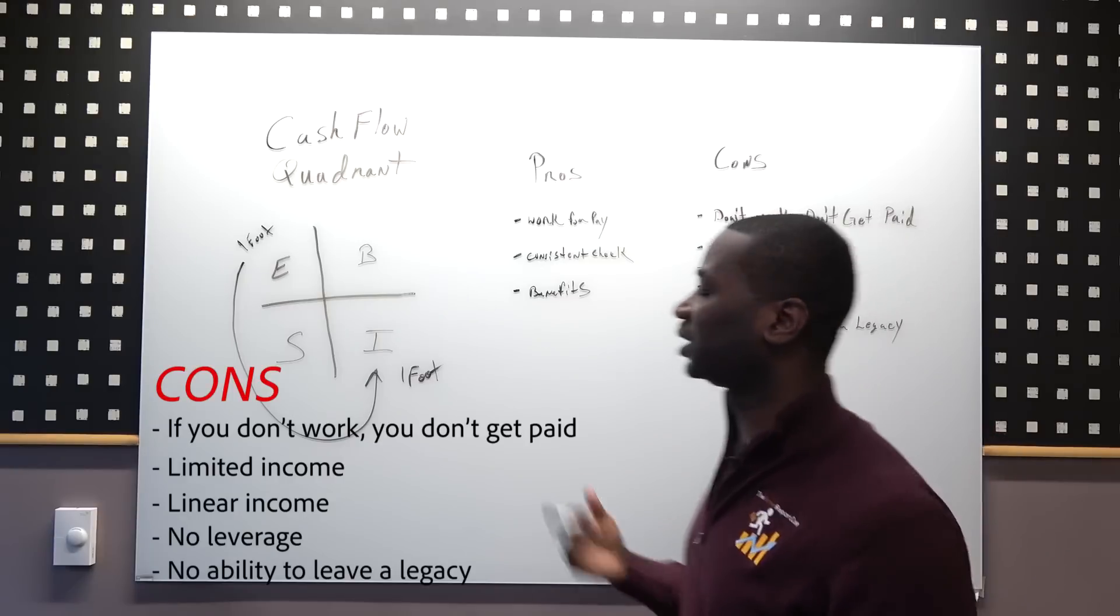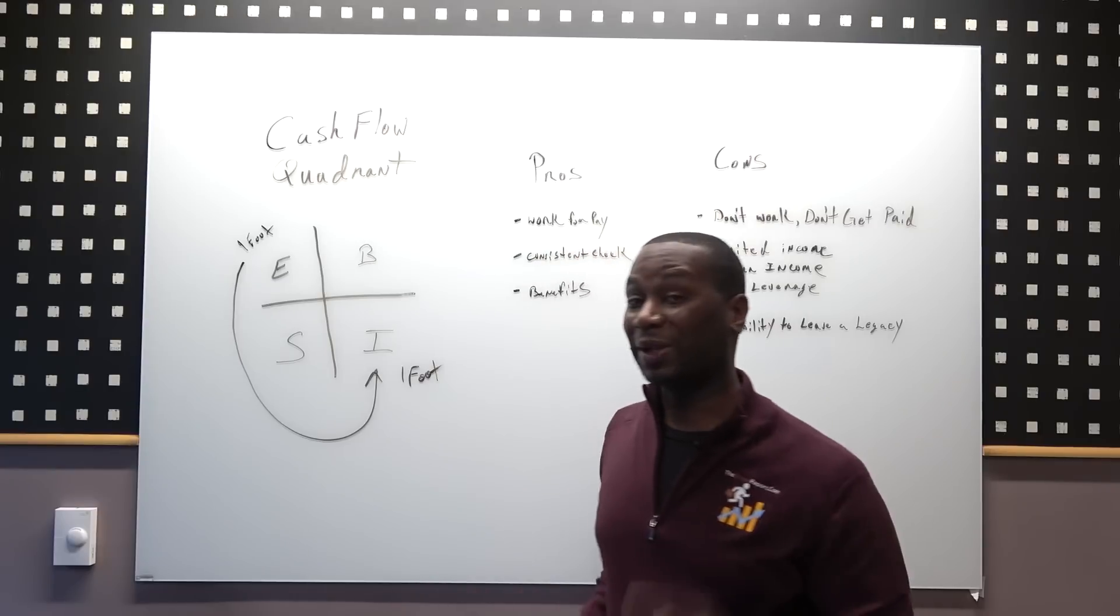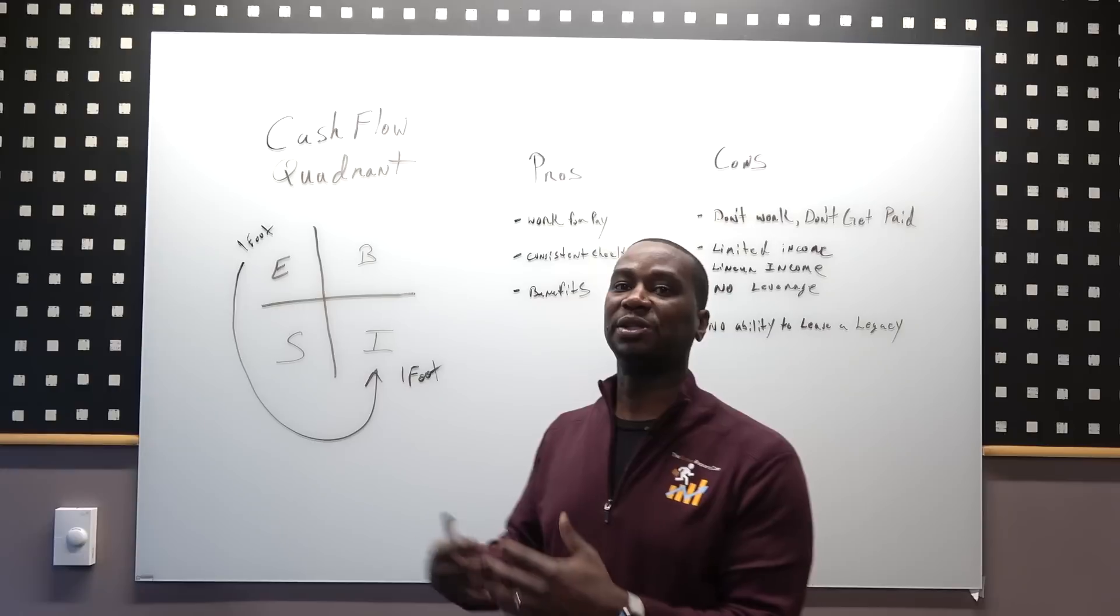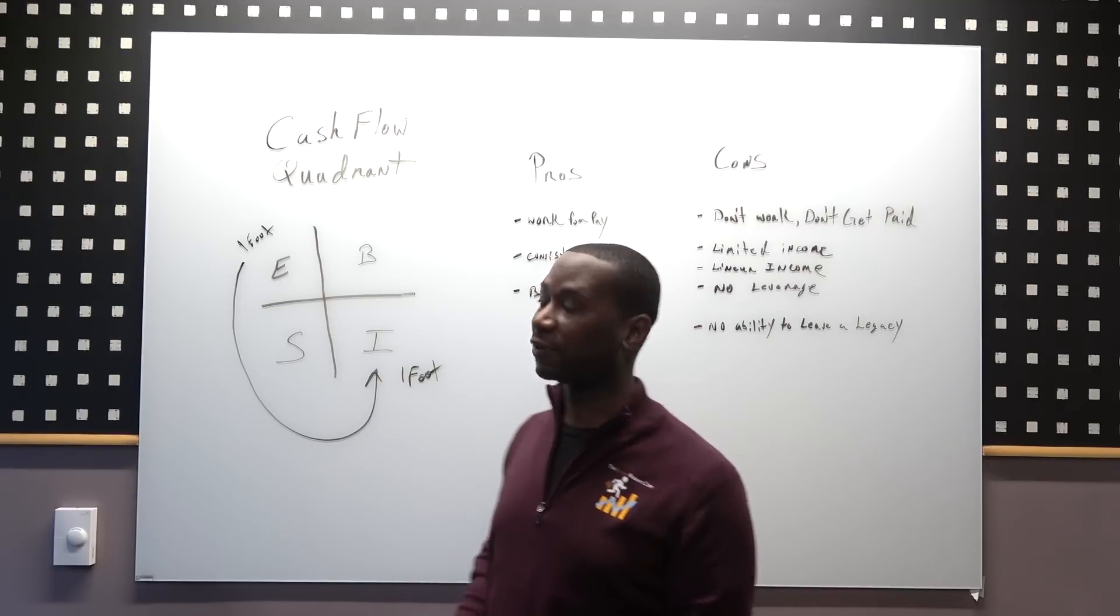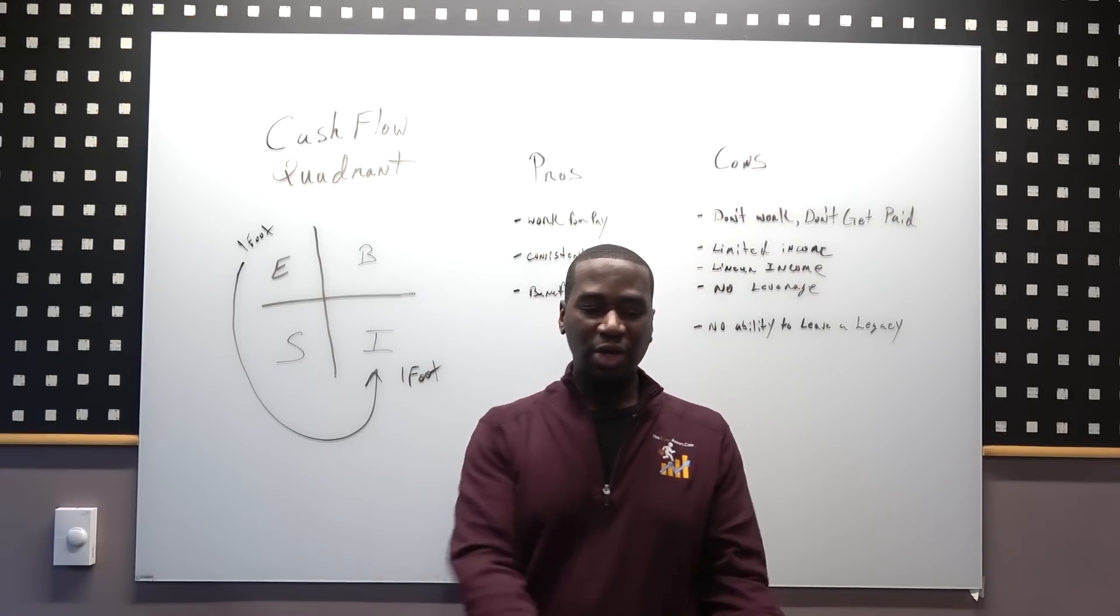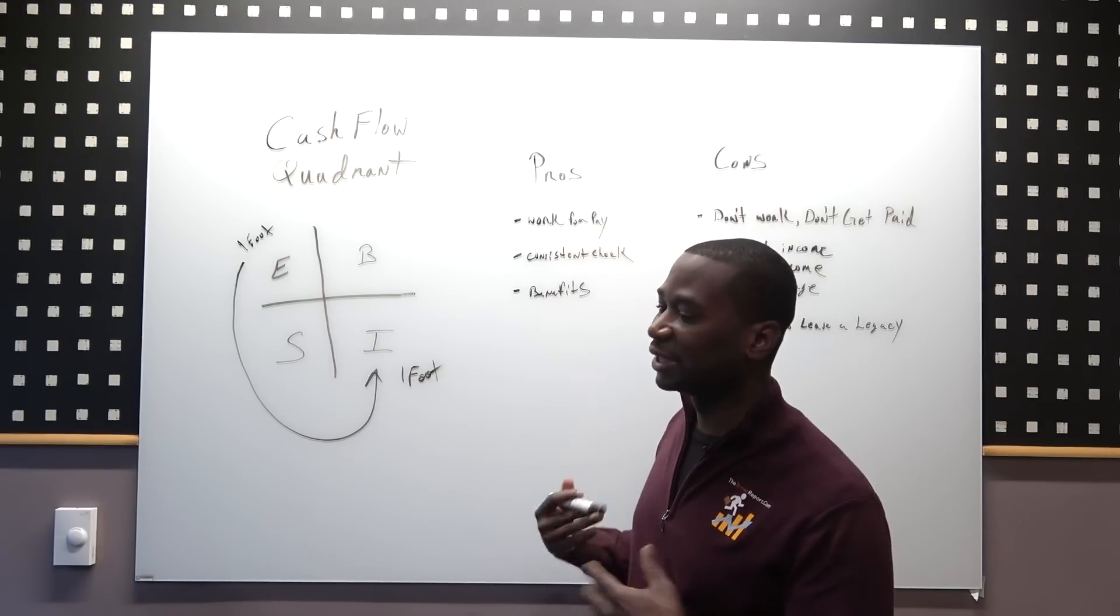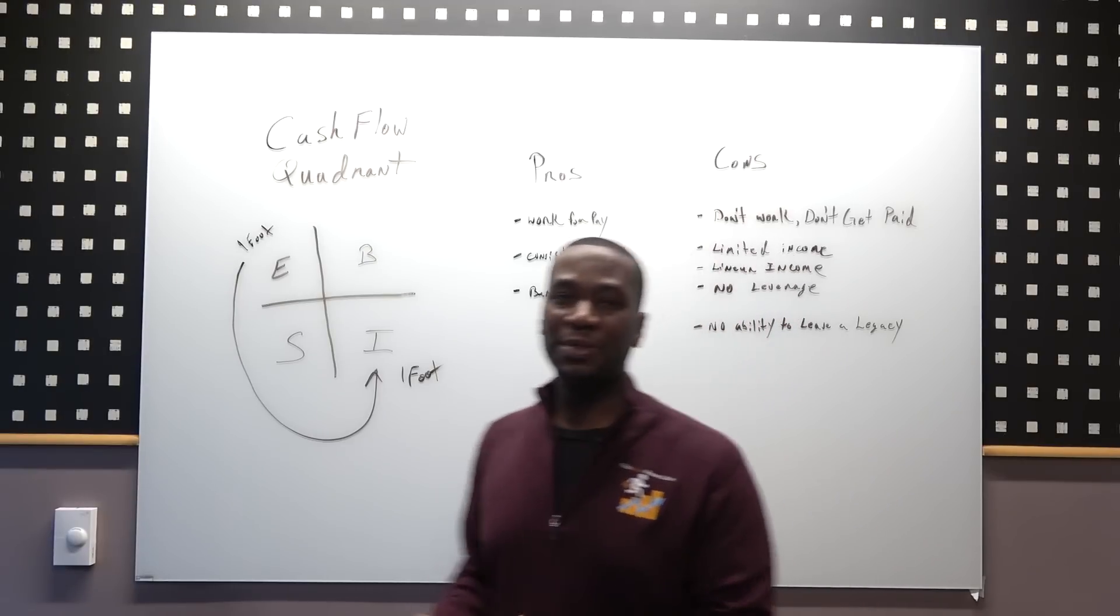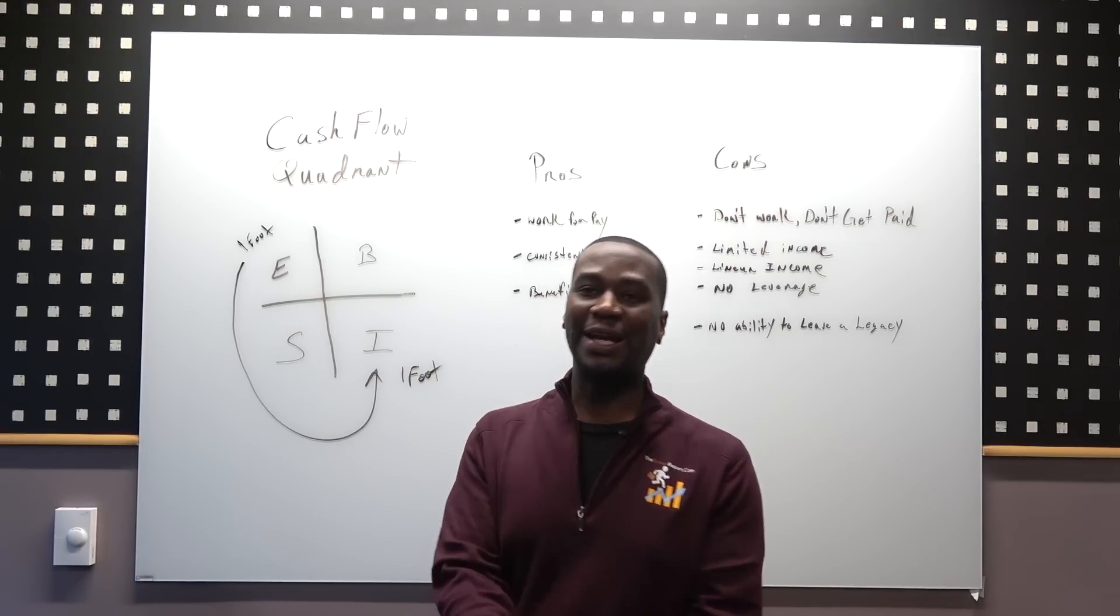No ability to leave a legacy - that's another problem with the E quadrant. When you think about legacy, it's not always money, but can you pass on some knowledge to leave a legacy? So you can teach your kids, your grandkids some type of trade or skill or information that generations after you could benefit from. When we think about the E quadrant, there's typically nothing to pass on. If you worked on the assembly line, you don't get to bring your kid in and he gets your job.